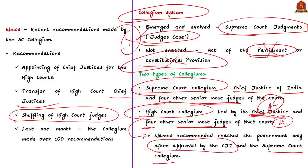This point is very important. For example, take Chennai High Court. Chennai High Court will have a Collegium system with the Chief Justice of Chennai High Court and four other senior judges of that High Court. They will make a decision and recommend it to the government. But before going to the government, it will go to the Chief Justice of India and the Supreme Court Collegium for approval. Only then can it go to the government.